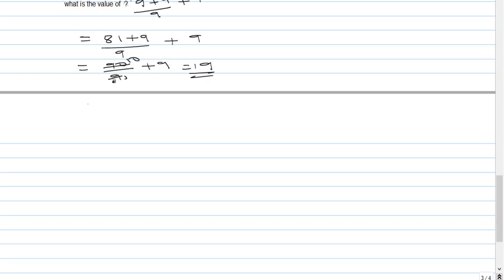9 over 9 after dividing gives us 10. So 10 plus 9 equals 19. The answer to that question is 19.